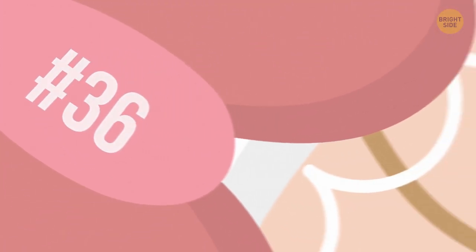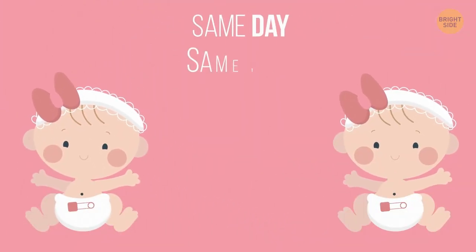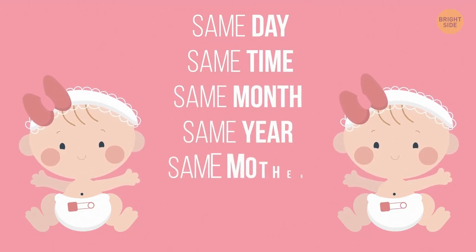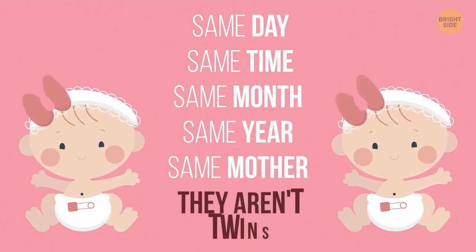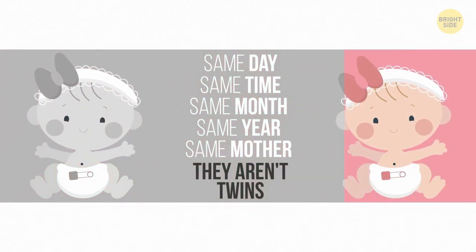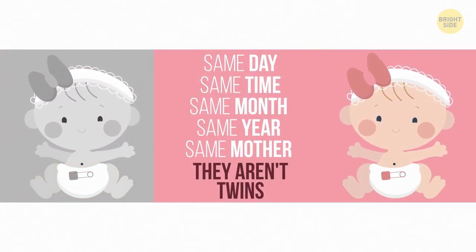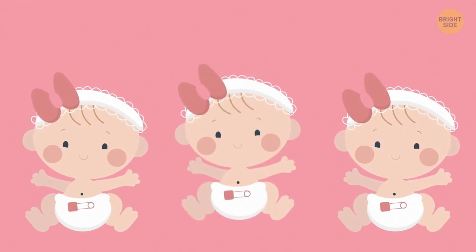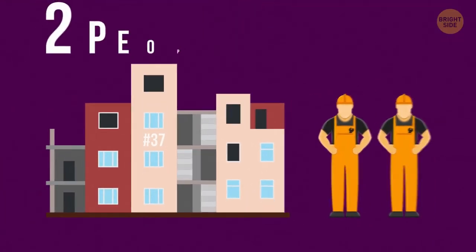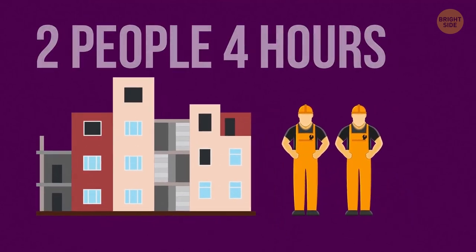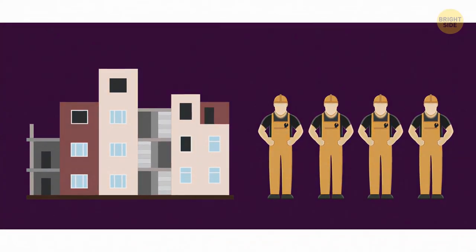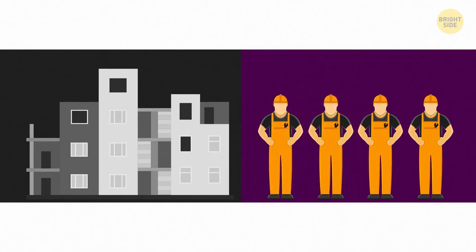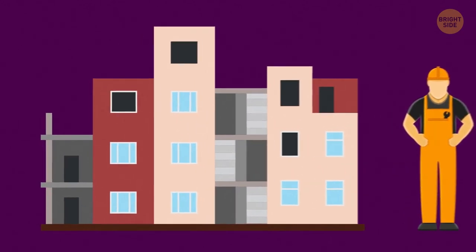36. Two baby girls were born on the same day, at the same time, in the same month and year, to the same mother, and still they aren't twins. How come? They're 2 babies of a set of triplets. 37. It took 2 people 4 hours to build a house. How long will it take 4 people to build the same house? No time! The house is already built.